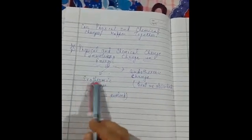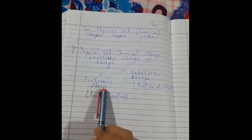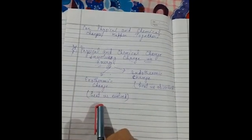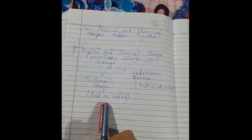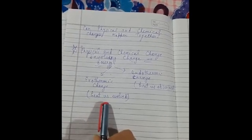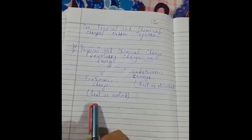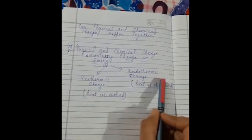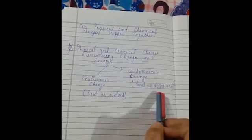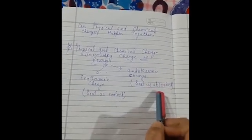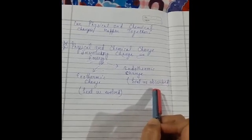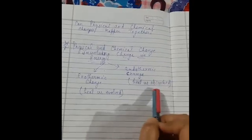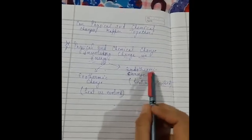An example of an exothermic change is burning of wood. In an exothermic change, the energy of the products is always lesser than the energy of the reactants. In an endothermic change, the energy of the products is always greater than that of the reactants. An example of an endothermic change is boiling of water.